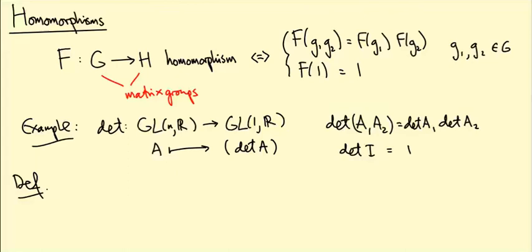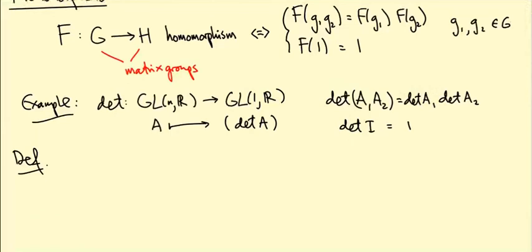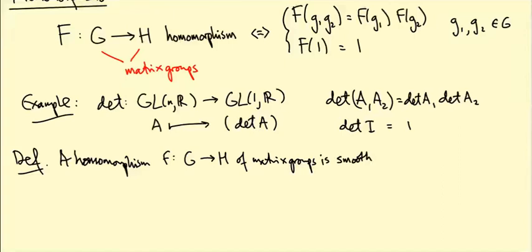We have local coordinates on our groups—these exponential charts. So we define a homomorphism F of matrix groups to be smooth or differentiable if it is smooth when written in local exponential charts.